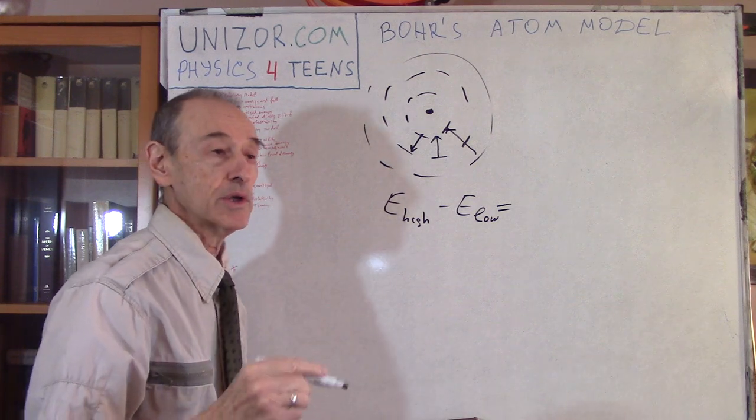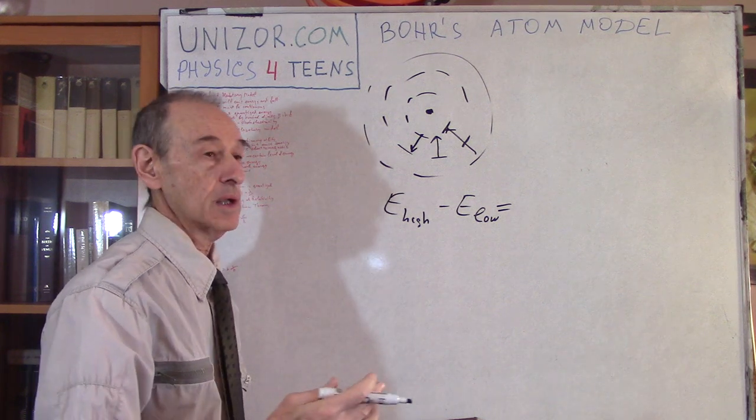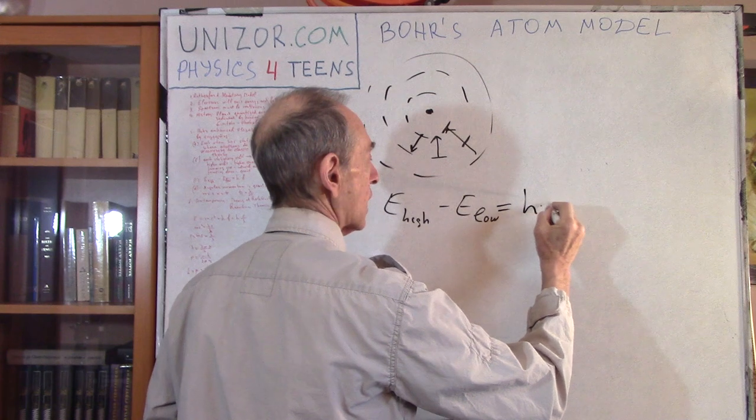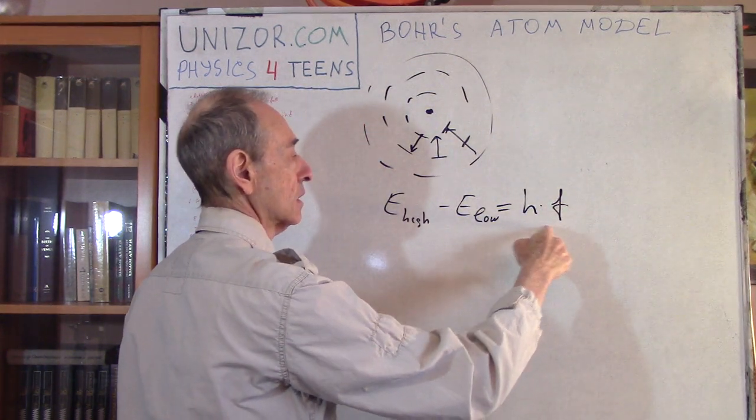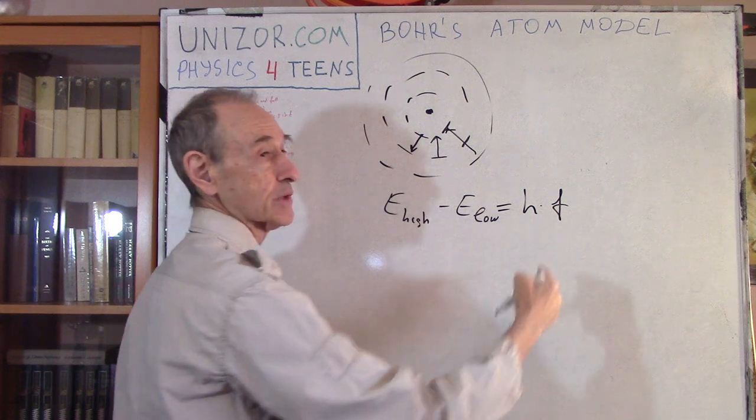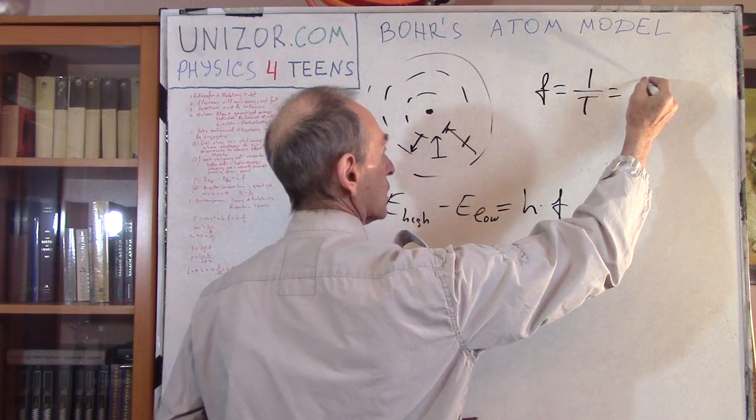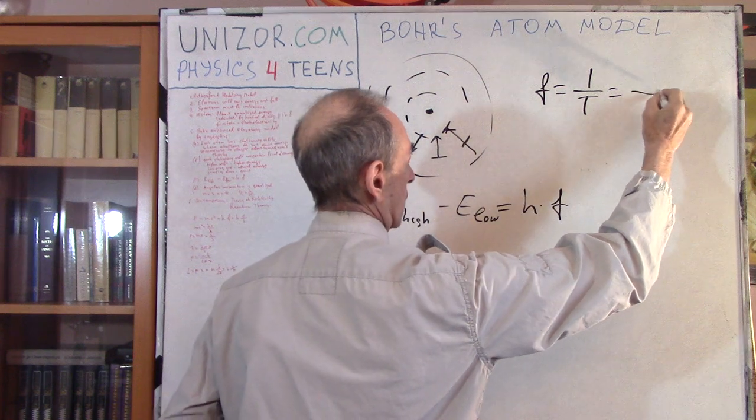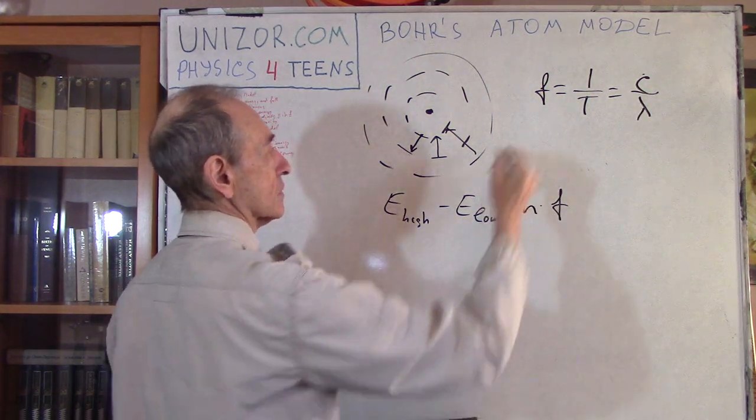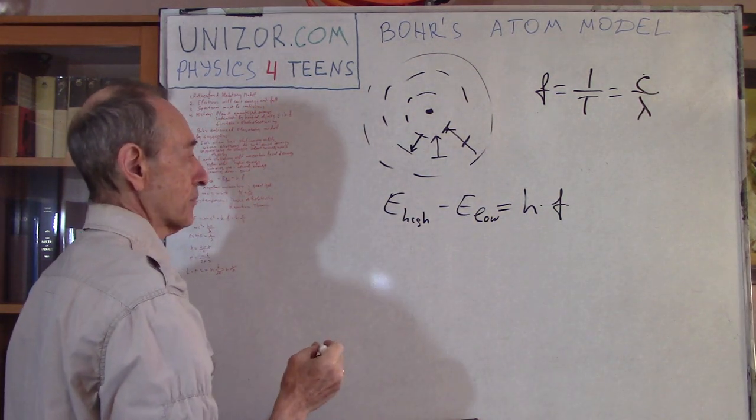Now we're going into theory which was developed before by Max Planck and then used by Einstein in the photoelectric effect. It's equal to H times frequency of light emitted, and this is Planck's constant. Whenever it moves from energy level to energy level, it emits light of this particular frequency. Frequency is equal to 1 over period, and period equals lambda divided by C. C is speed of light, lambda is wavelength. This is the frequency, this is the period, this is the wavelength, and this is the speed.